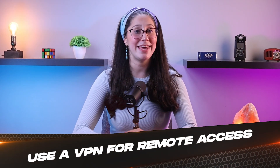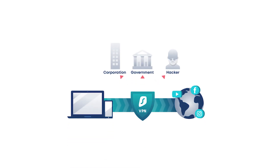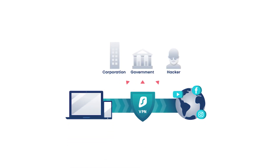Other than that, try to use a VPN for remote access. If you need to access your smart home devices remotely, use a virtual private network. A VPN encrypts your connection, making it much more difficult for attackers to intercept your data.